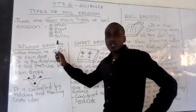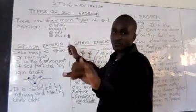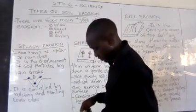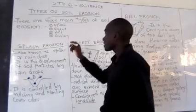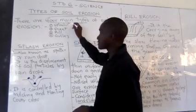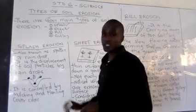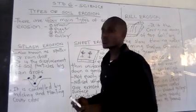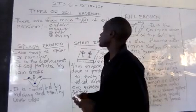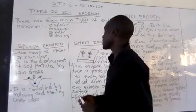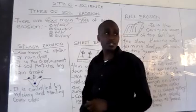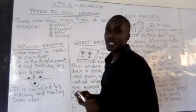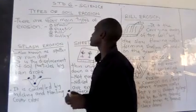The agents of erosion are water and wind. Water can lead to splash erosion, sheet erosion, rill erosion, and also gully erosion. Wind can only lead to one type of erosion, which is sheet erosion. So sheet erosion is the only type that can be caused by both wind and water.